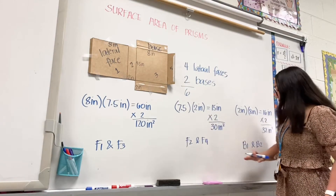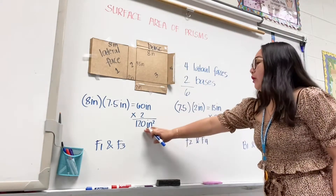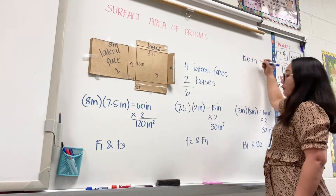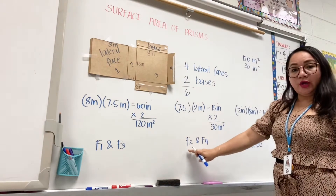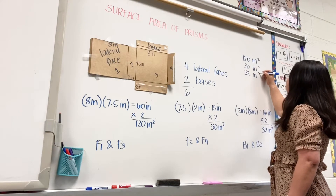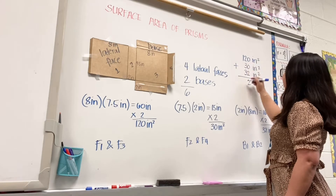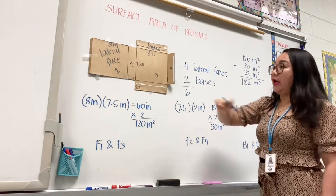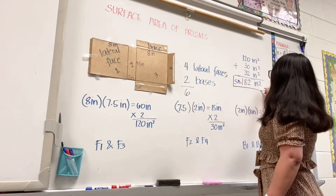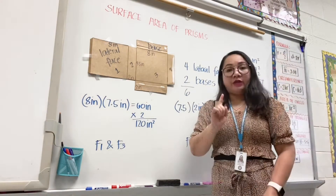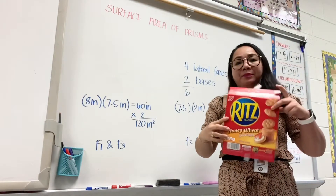Take note there are six faces total — two, two, four, six. The next thing we will do is add all the lateral faces and the bases together. We have one hundred twenty inches squared for face one and face three, thirty inches squared for face two and face four, and thirty-two inches squared for base one and base two. Adding them together: thirty-two plus one hundred twenty plus thirty gives one hundred eighty-two inches squared. Therefore, the surface area of this entire figure is one hundred eighty-two inches squared, and I need one hundred eighty-two inches squared of wrapper to wrap the whole box.